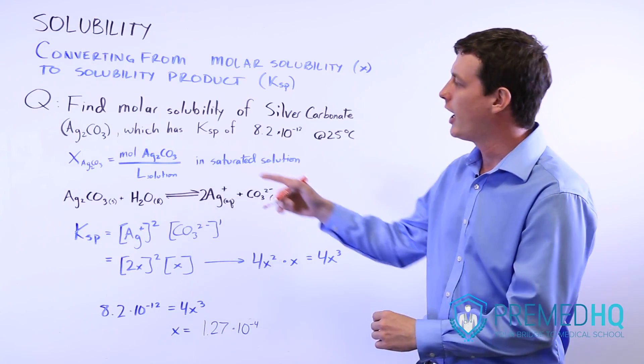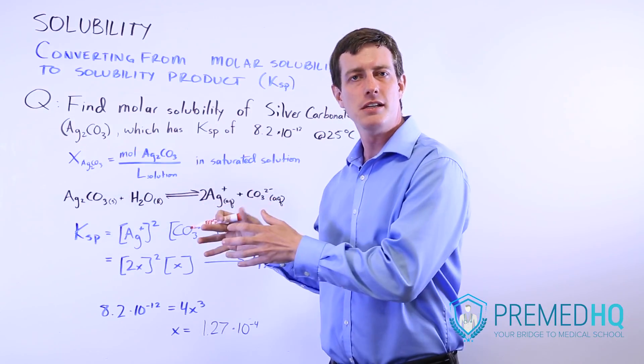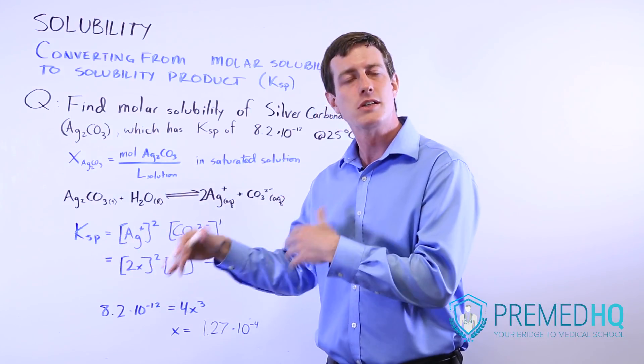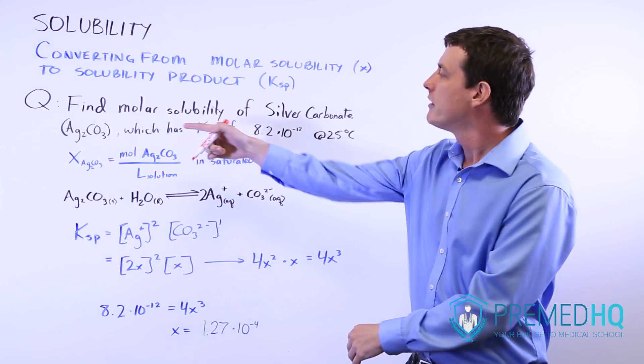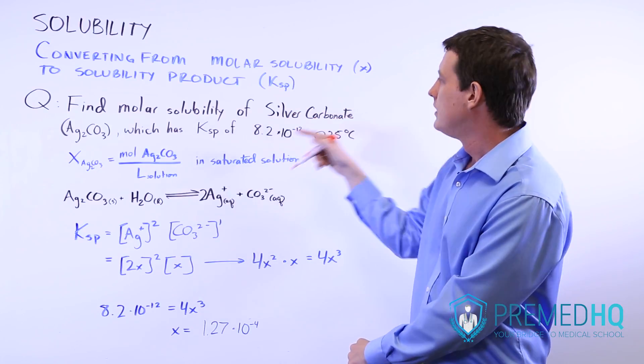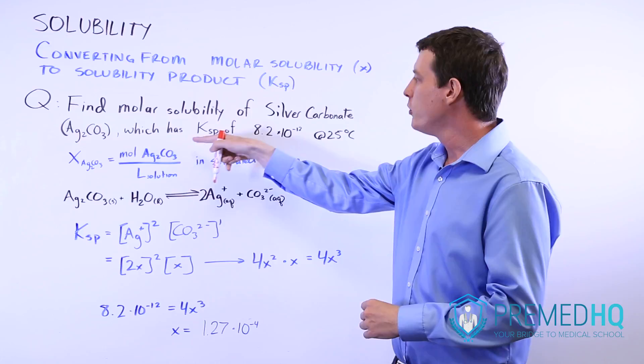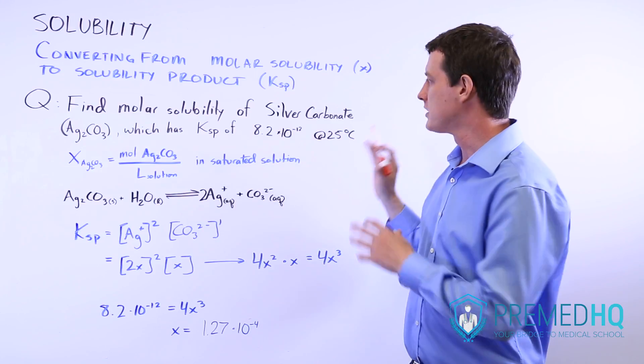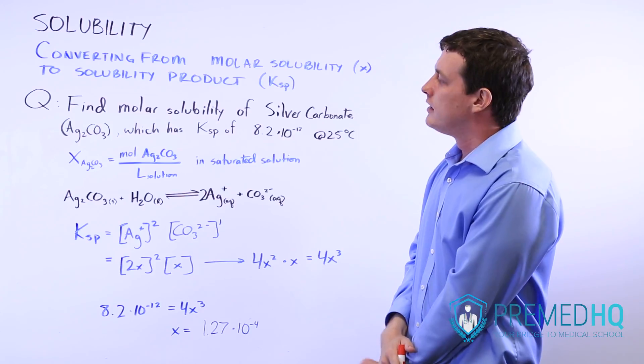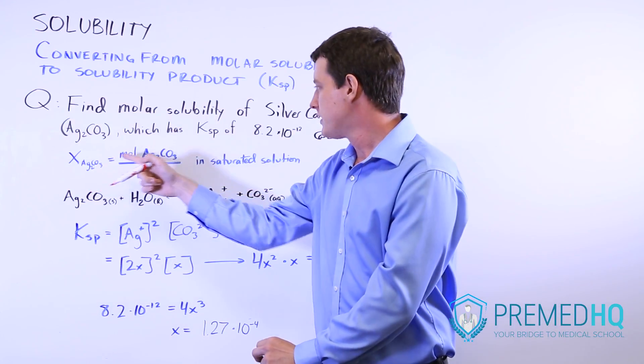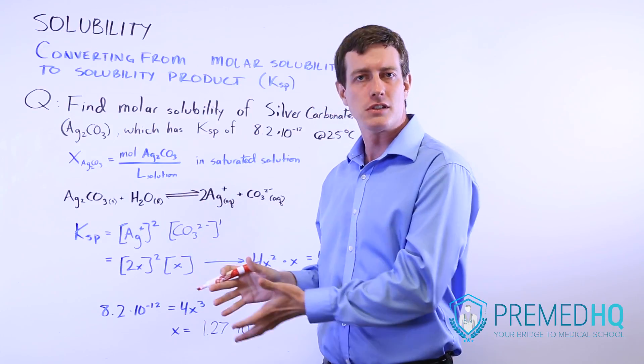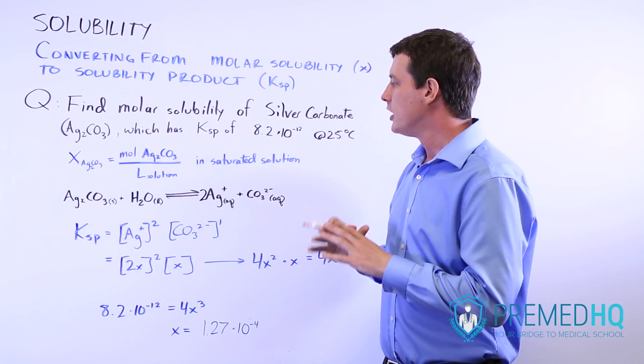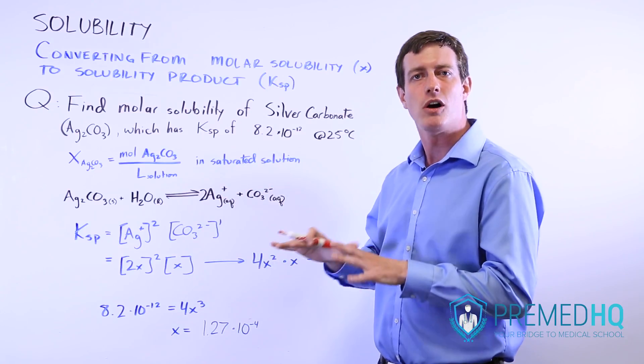Just remember that molar solubility asks how much of the initial compound you can put in before it becomes saturated, whereas solubility product is about how much of the dissolved pieces will be there at equilibrium. Here we have a question: Find the molar solubility of silver carbonate, Ag2CO3, which has a known KSP value of 8.2 × 10^-12 at 25°C, which is a fairly standard temperature. The way that you look at molar solubility is how many moles of silver carbonate can you put in per liter of solution in order to saturate it, the point where if you were to add any more, you would start to have the silver carbonate precipitate because it would no longer be able to dissolve.